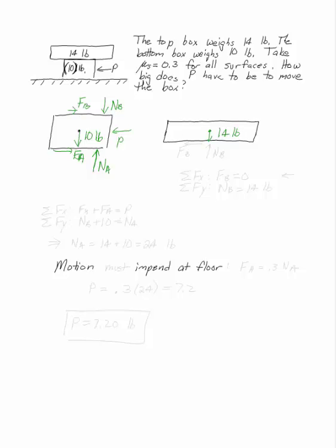On the top box I have a 14 pound load and equal and opposite FB and NB. If I take the sum of the forces on my top box, I'm starting there because here's where I have a number, I get FB equals 0 and NB equals 14 pounds.